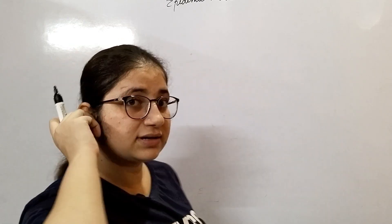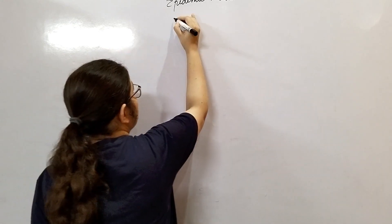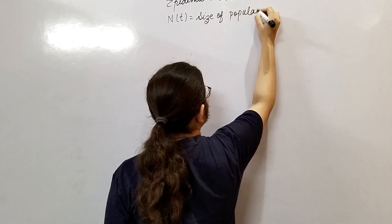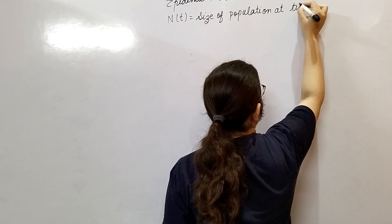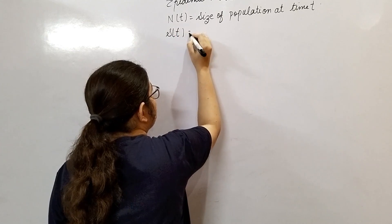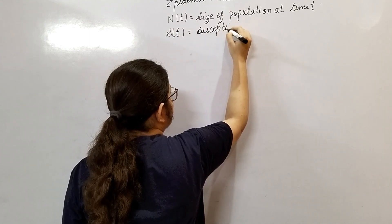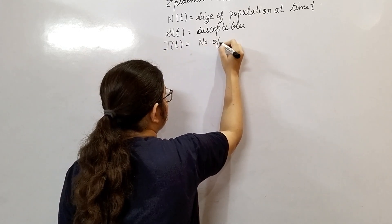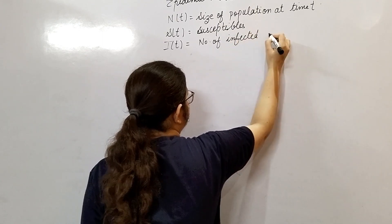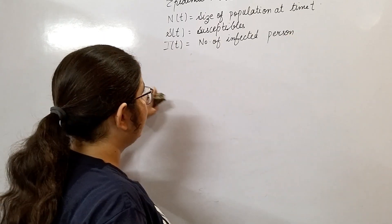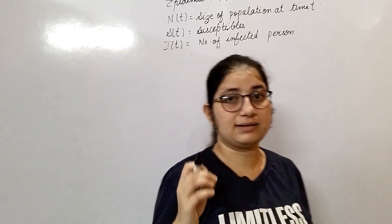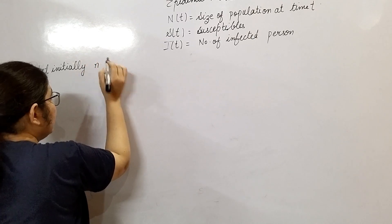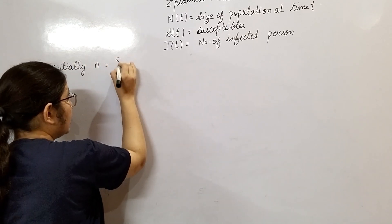In both epidemic models, let me first write some notation. N(t) is the size of the population at time t. S(t) represents susceptibles — those who can get infected. I(t) represents the number of infected persons at time t. Both susceptibles and infected are measured at time t.